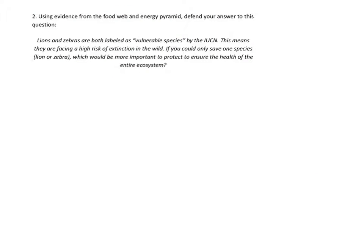The final question of this assessment asks you to use evidence from both the food web and the energy pyramid to tell us who would be the more important species to keep alive — the zebra or the lion. There are different ways you can explain this; there is no right or wrong answer. But most people who got this wrong did not use any information from the energy pyramid. It's important that you use evidence from both the food web and the energy pyramid. Here's a brief overview of some of the arguments you could have made.